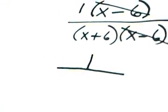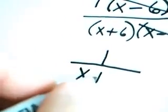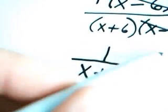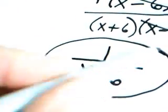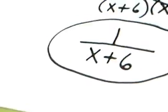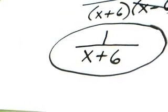1 goes in the numerator. x plus 6, of course, is what remains in the denominator. And there's my final answer to this problem. 1 over x plus 6.